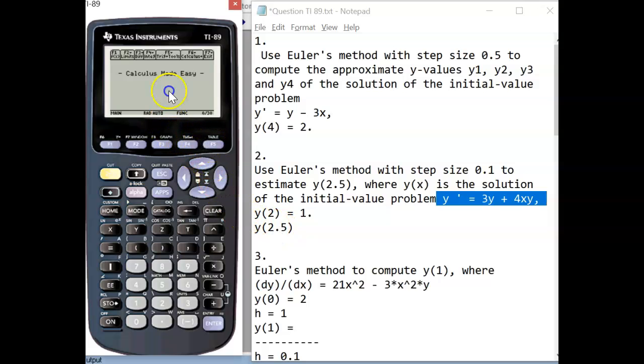So within Calculus Made Easy, we are going to option F6 differential equations. We press enter, and then these are all the options we have here for differential equations. Since we're doing the Euler method, we're going to use option F6.